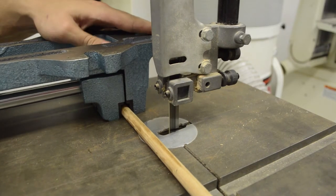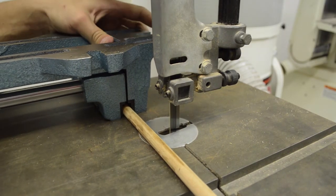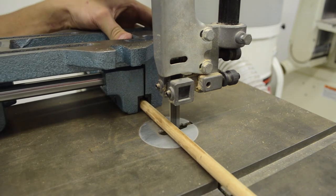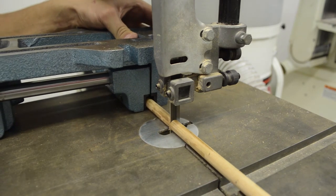Now the guard shouldn't have to be adjusted to allow room for the vise. If it interferes, then the piece is too small to cut and a different method should be used, such as a handsaw.